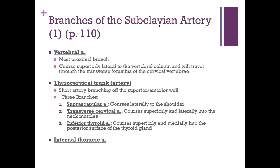Off the subclavian artery we have the vertebral artery, which travels the same path as the vein — through the transverse foramen of the cervical vertebrae. It serves as the secondary route that blood gets to the brain.